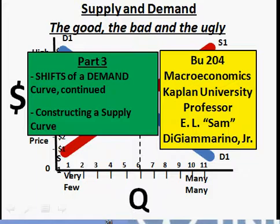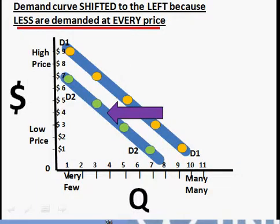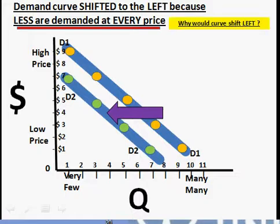Here we are back with part three. We're going to continue talking about a shift in the demand curve. This time our demand curve is going to shift to the left, and that will mean that there will be less demanded at every price.